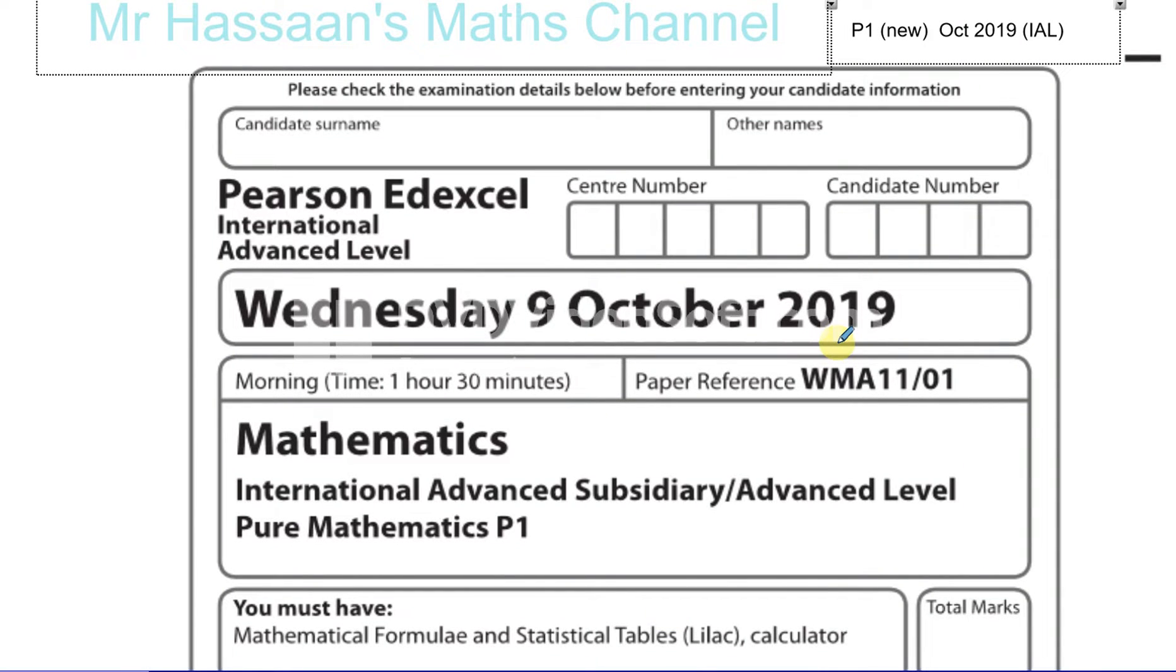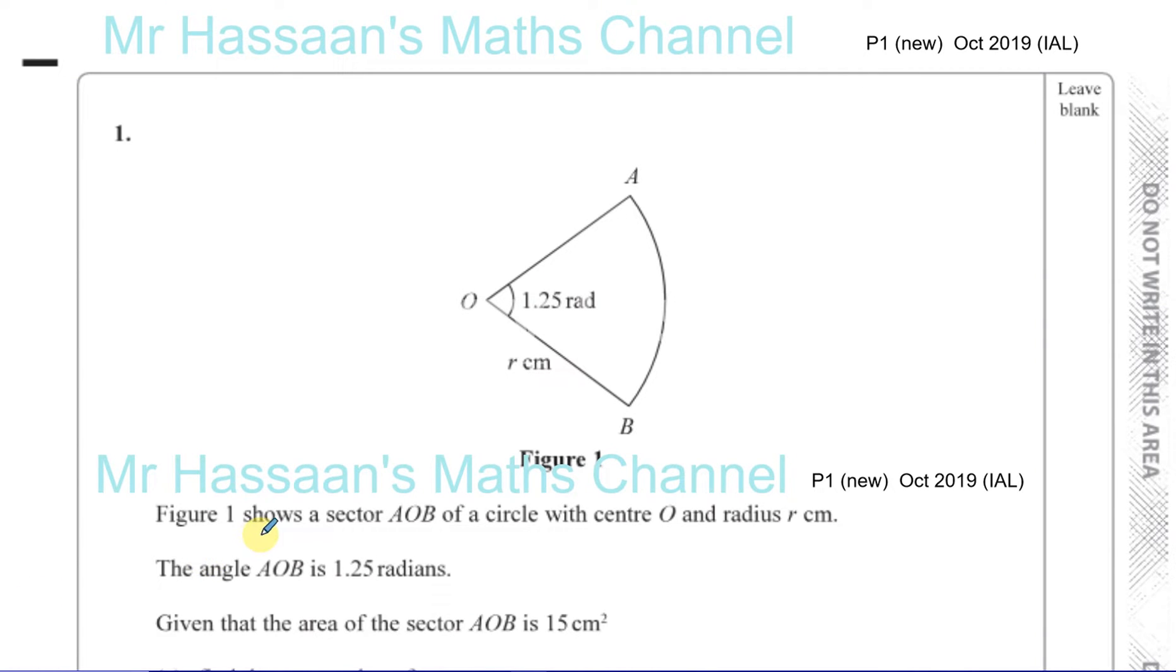Now for the October 2019 International A-Level P1 paper, question number one. You have a sector of a circle with center O and radius R. The angle AOB is 1.25 radians. The area of the sector is 15 centimeters squared.